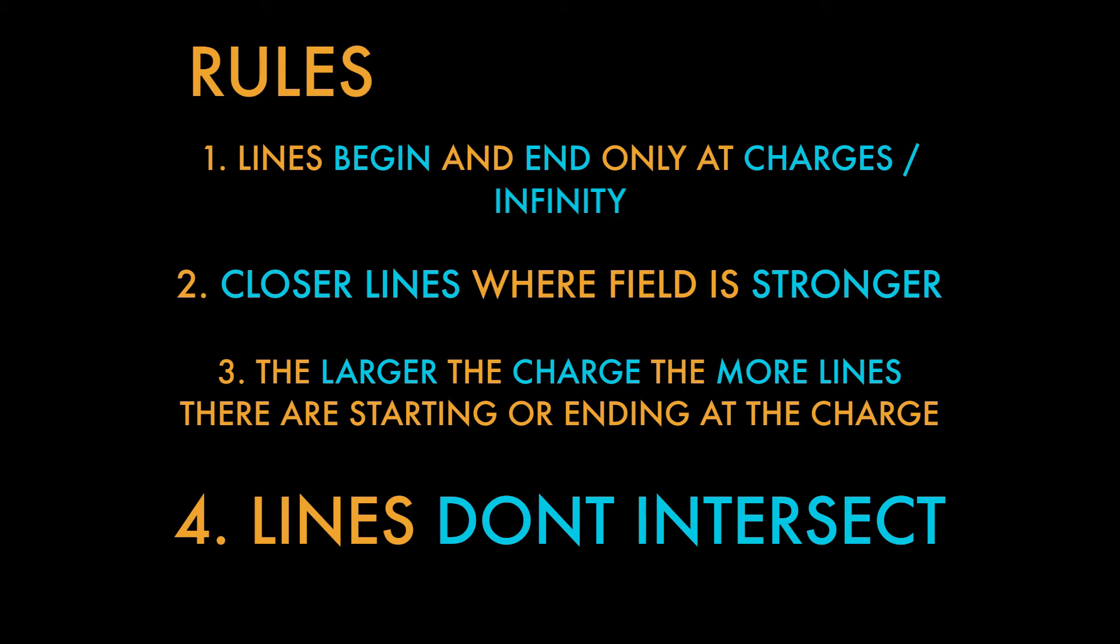And this logically makes sense, right? As we talked about in the previous video, for any point in space there's a unique electric field vector. So if electric field lines intersected, that means there'd be two different electric field vectors for one point, which just can't be the case. All right, let's look at some visual examples to illustrate all the rules I just talked about.